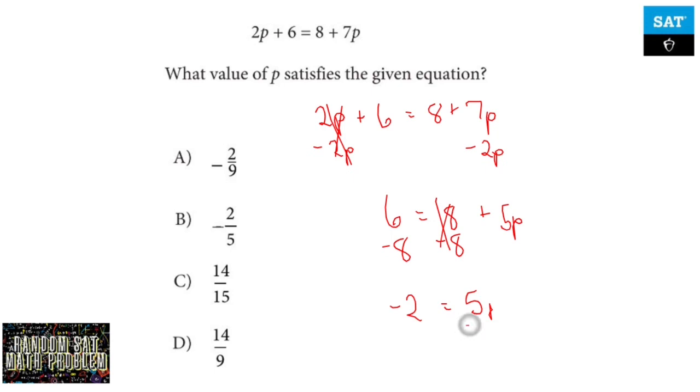Divide by 5. And p equals negative 2 over 5.